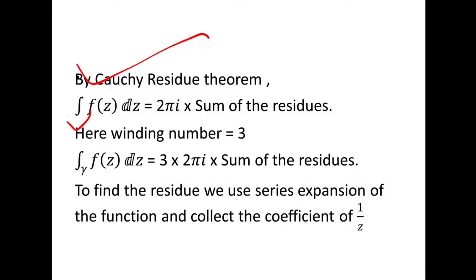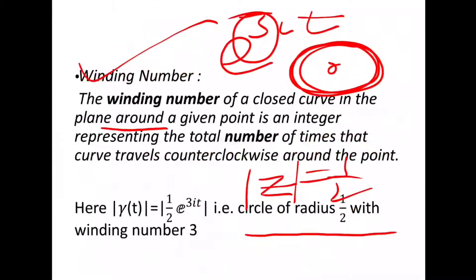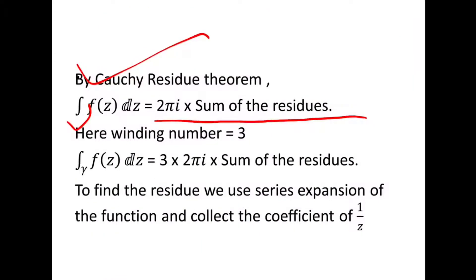∮f(z)dz = 2πi × sum of the residues. But for the case of winding number, since here the winding number is 3, then the winding number is simply multiplied with 2πi × sum of the residue × winding number.